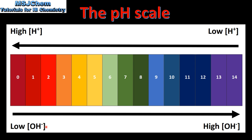If we think in terms of hydroxide ion concentrations, a substance with a low pH has a low concentration of hydroxide ions, and a substance with a high pH has a high concentration of hydroxide ions.